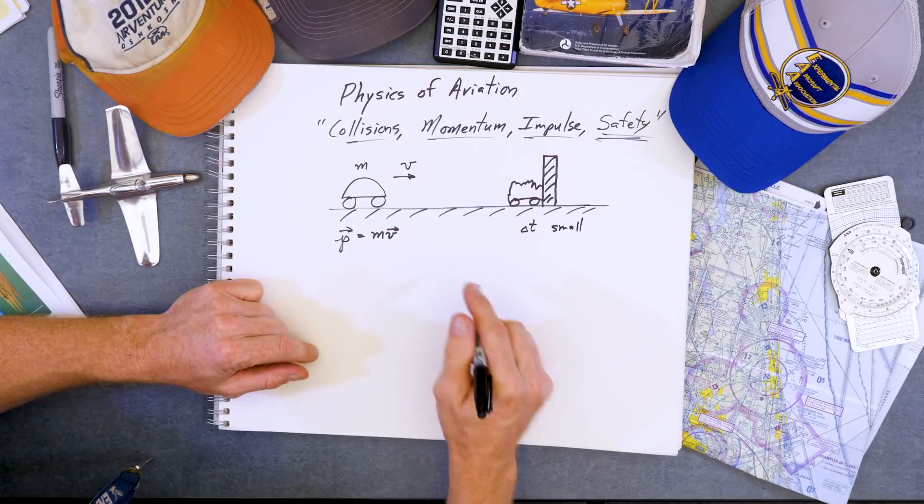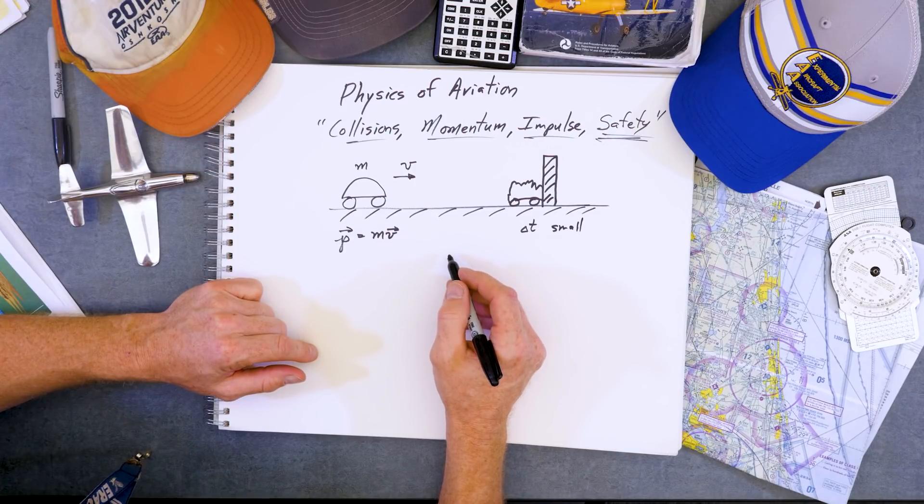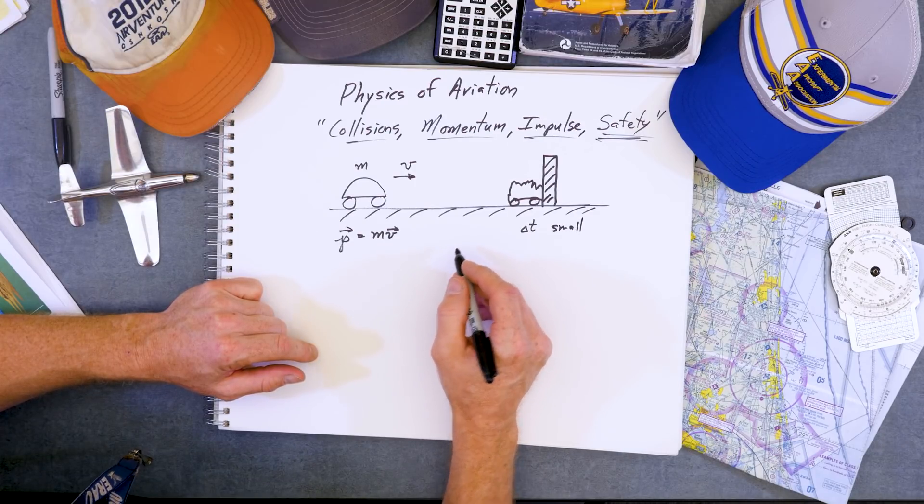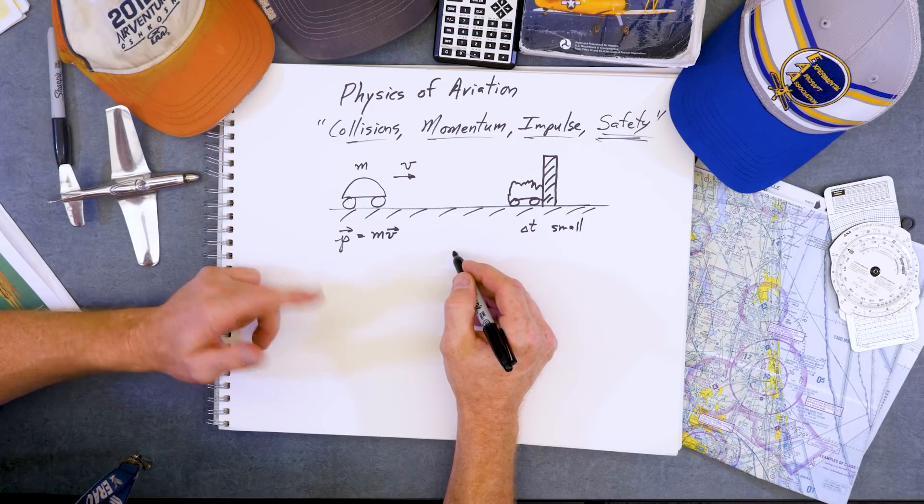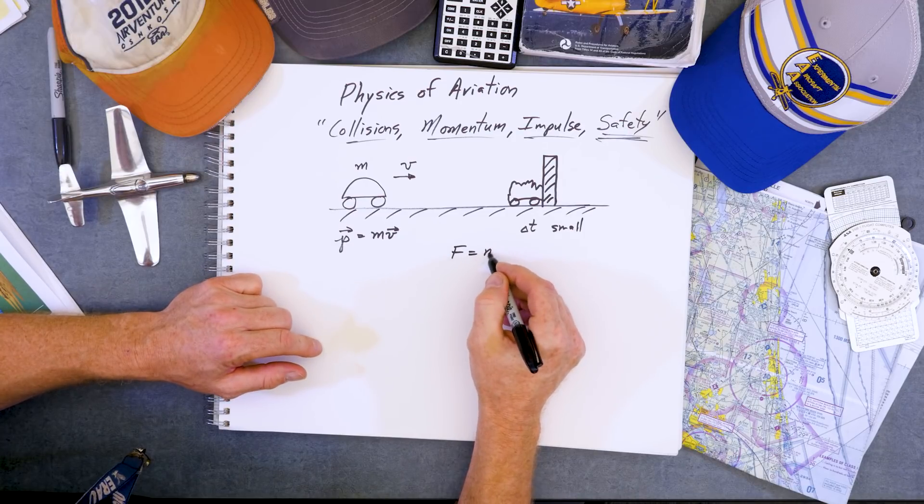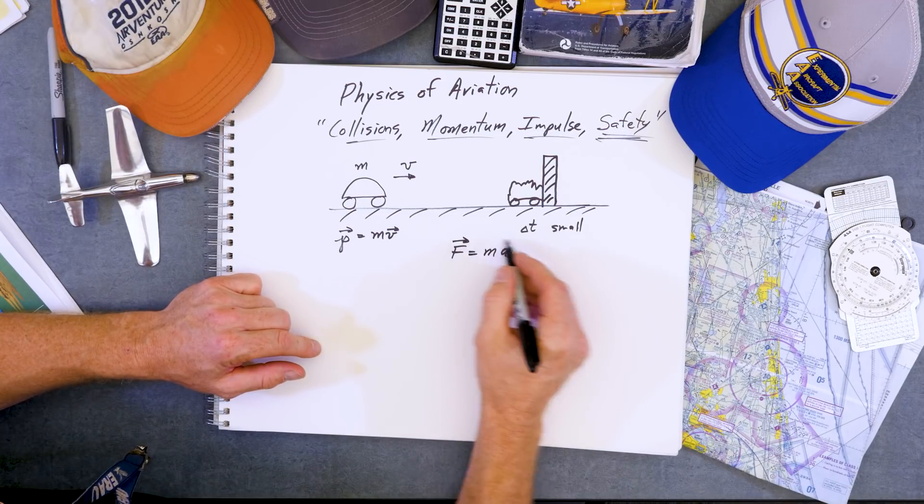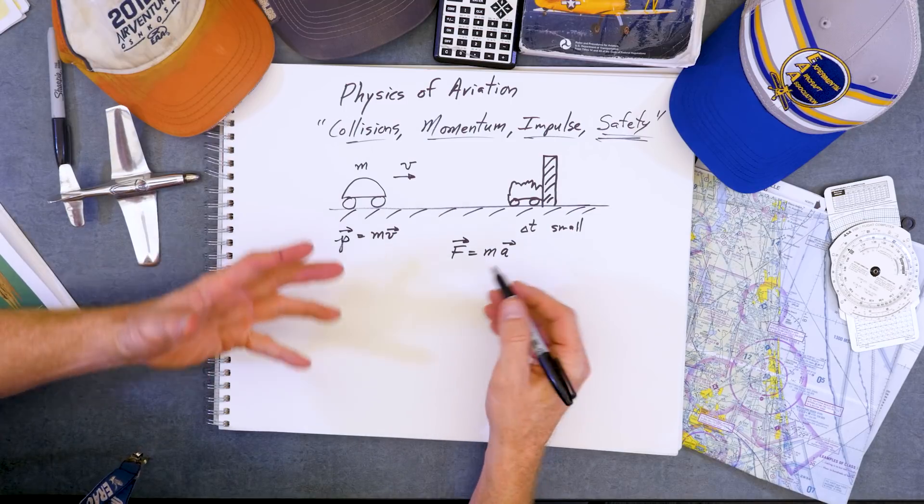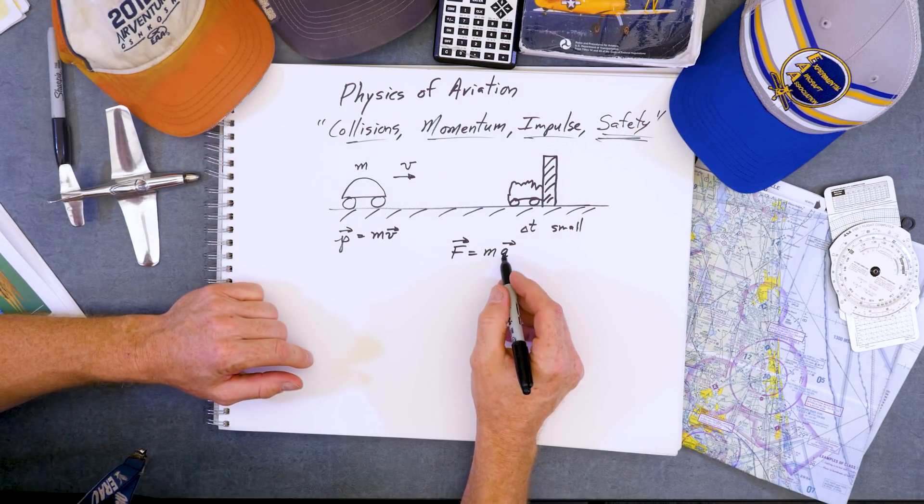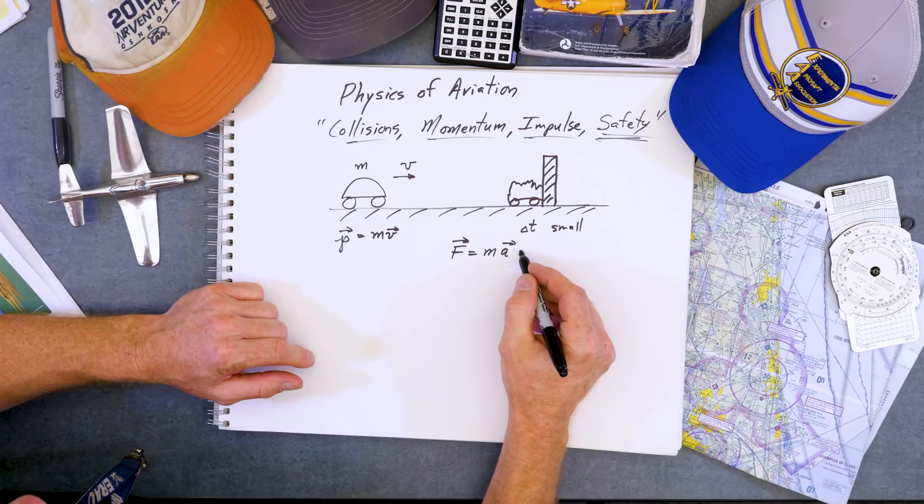So we think back to Physics and Newton's Laws from the PHAK, the Pilot's Handbook of Aeronautical Knowledge or Physics class that says F equals ma. Some force equals mass times acceleration. These are vector quantities. We can just think of the magnitudes. And acceleration is change in velocity per time.